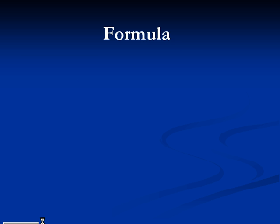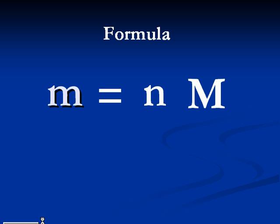In general, the mass of n moles of acetic acid is n times 60.06 grams. Mathematically, we can express this idea using the equation lowercase m equals n times capital M.